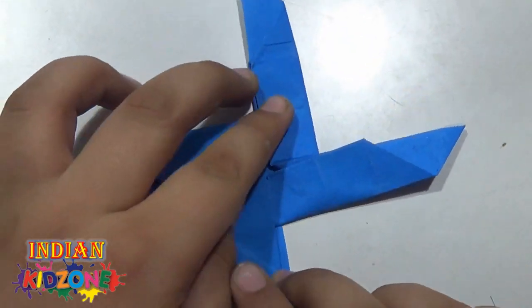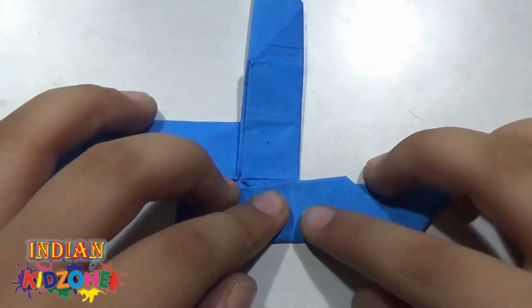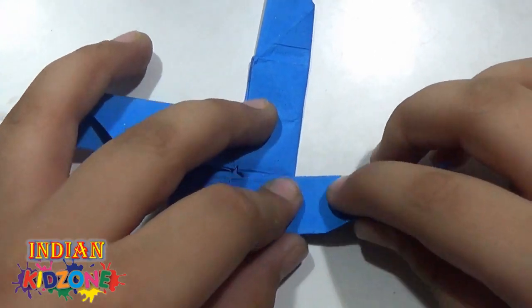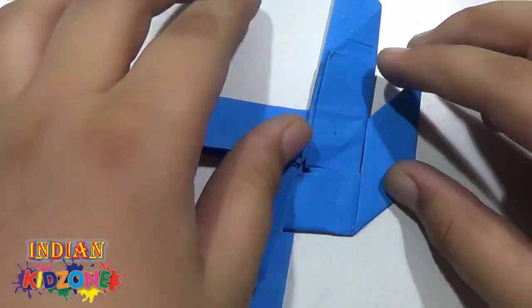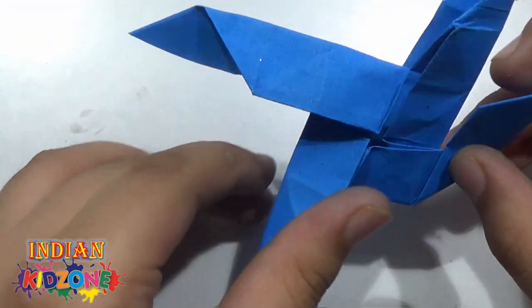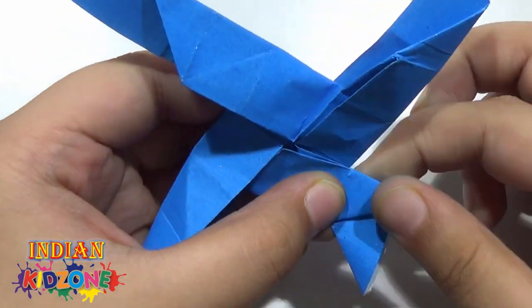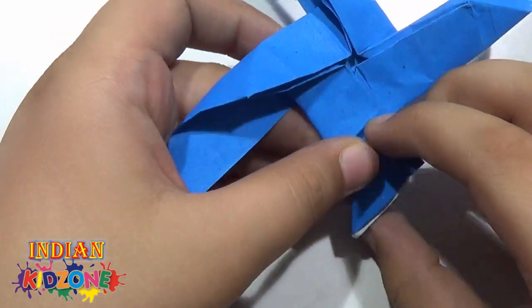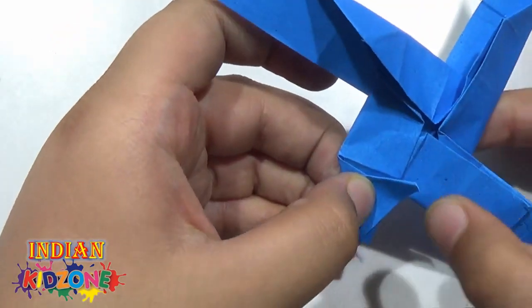Now we will fold so that this edge aligns with this edge. Fold it like this. Crease it properly. Now fold it backwards like this. Now fold it in front. Like this.